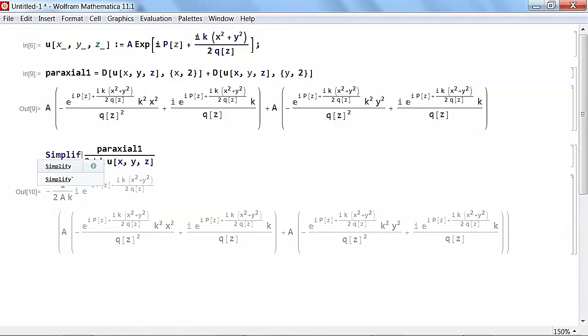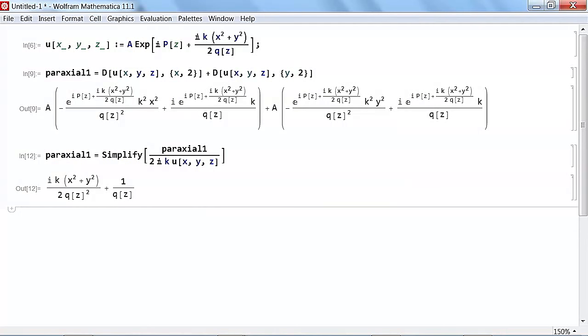Let's redefine that as Paraxial 1. That's the first half of the Paraxial equation. Now let's have a go at Paraxial 2. This was 2IK times the partial derivative of U of X, Y, Z once with respect to Z.